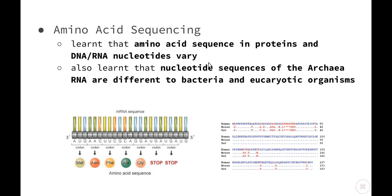And lastly, amino acid sequencing. We know that amino acids join together in order to form proteins, which then carry out a variety of different jobs within organisms. Scientists learned that the amino acid sequence in proteins and the DNA or RNA nucleotides varied between prokaryotes and eukaryotes. They also learned that the nucleotide sequences of the archaea RNA are different to bacteria and other eukaryotic organisms. So we went from the very simple light microscope — which allowed us to understand that prokaryotes were unicellular, had a cell membrane and a cell wall — all the way through to the very advanced technology of amino acid sequencing, where we could actually look at the amino acids that formed the proteins and how they varied between prokaryotic and eukaryotic organisms.